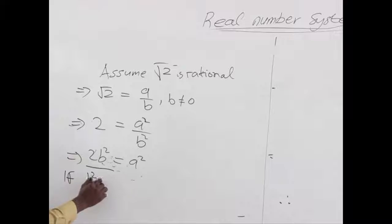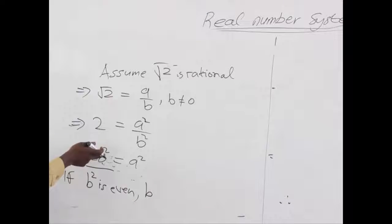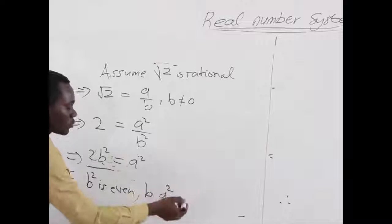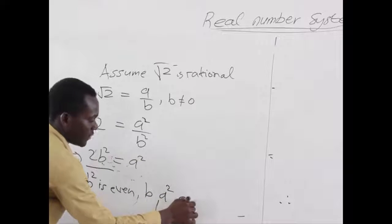So if b squared is even, it follows that b is also even, because the square of any even number is even. And since the entire left-hand side is even, the right-hand side is also even. So a squared is even.